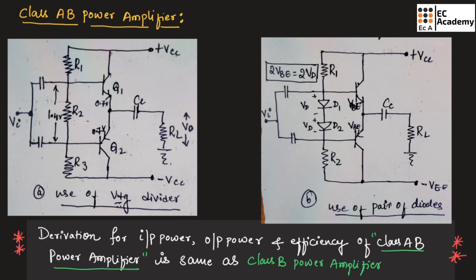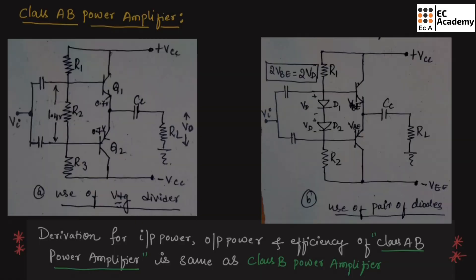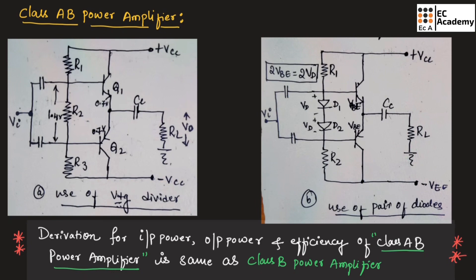The efficiency of class AB power amplifier is 78.5%. This is about class AB power amplifier. Hope you have understood the topic. Thank you.